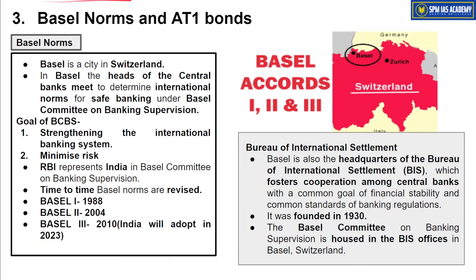Basel is a city in Switzerland, not far from Zurich. In Basel, there is an international organization called BIS — the Bank for International Settlements — established in 1930 by the central banks of different countries. Its main role is to coordinate and supervise international transactions. For example, domestic transfers are supervised by the RBI, but cross-border payments — say from the US to an Indian bank account — require an international organization like BIS for harmonization and supervision.